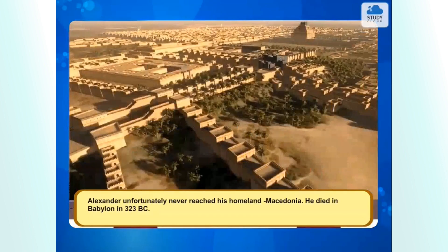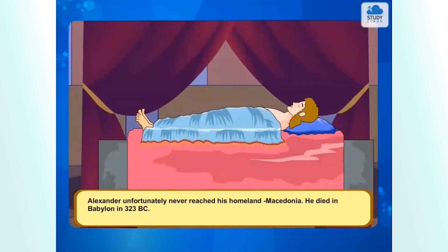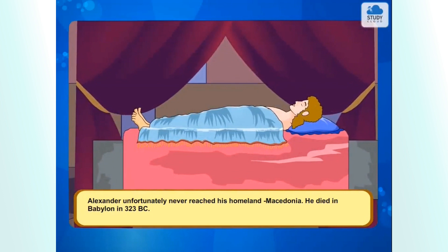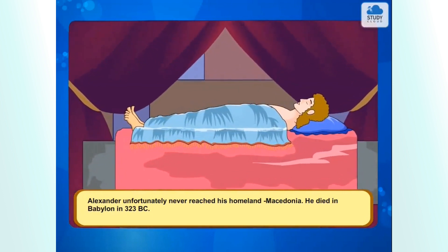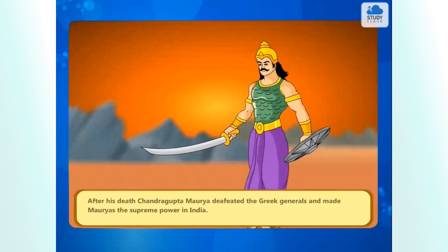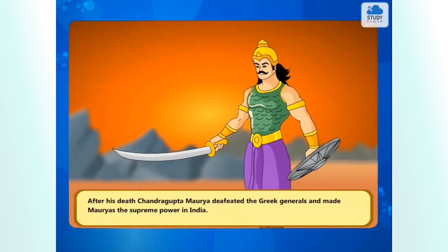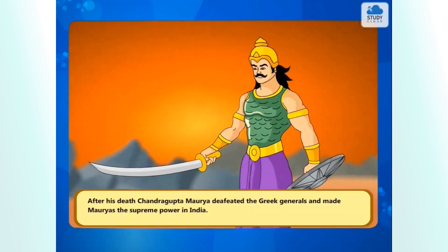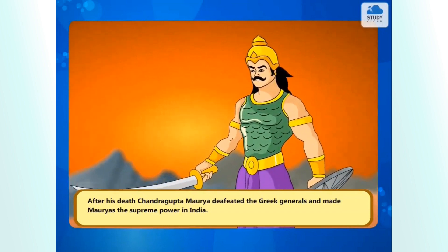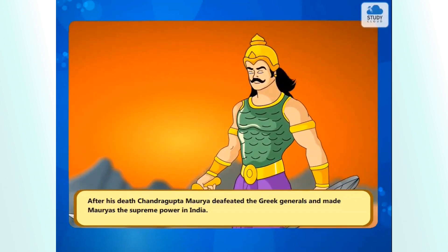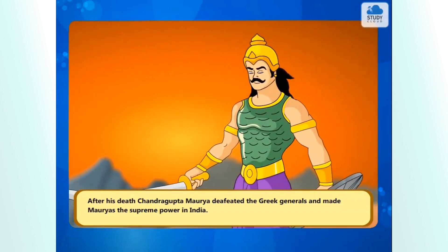Alexander, unfortunately, never reached his homeland, Macedonia. He died in Babylon in 323 BC. After his death, Chandragupta Maurya defeated the Greek generals and made the Mauryas the supreme power in India.